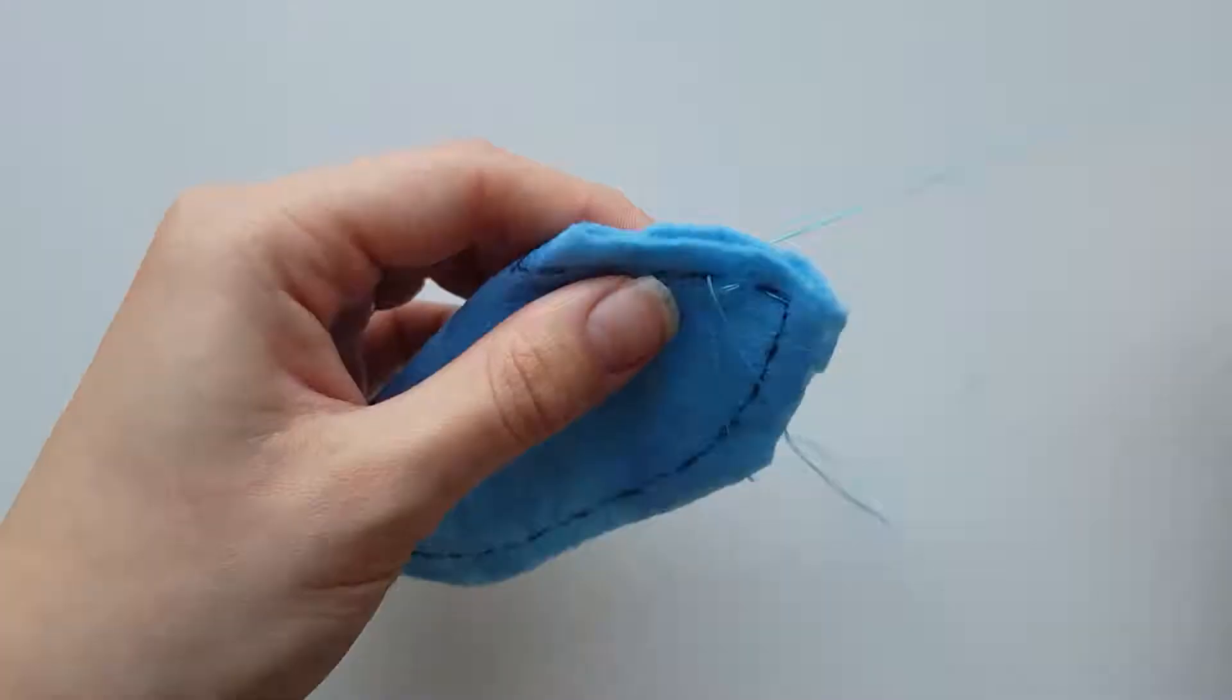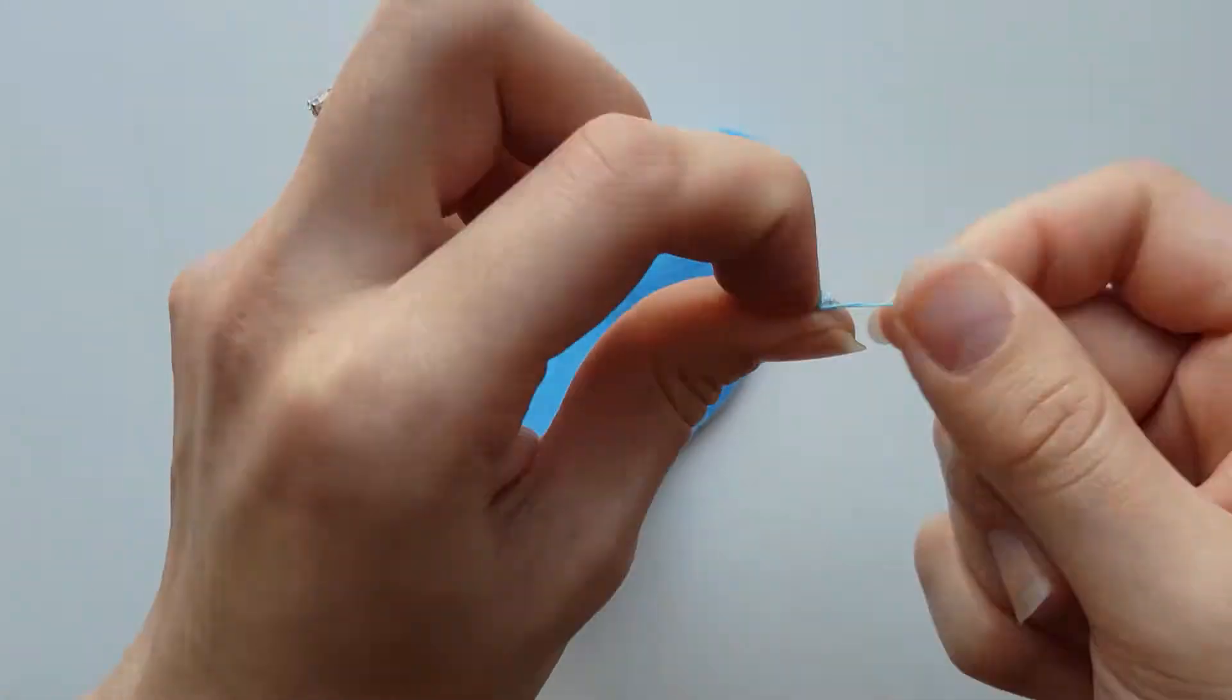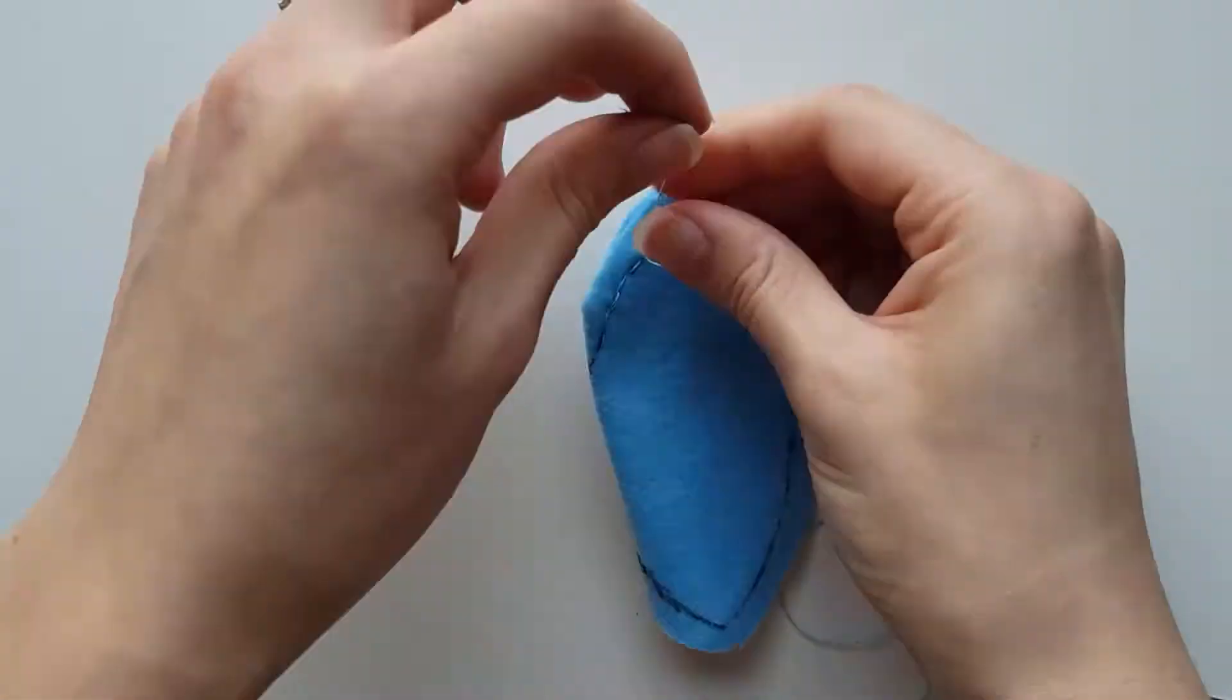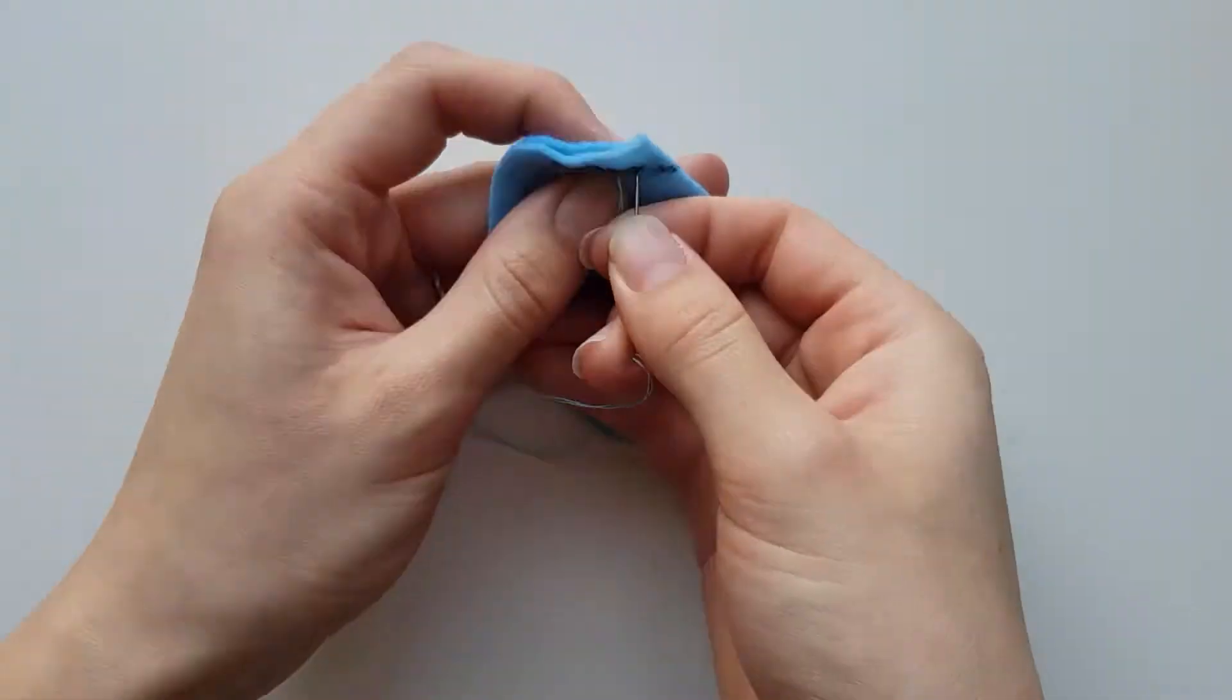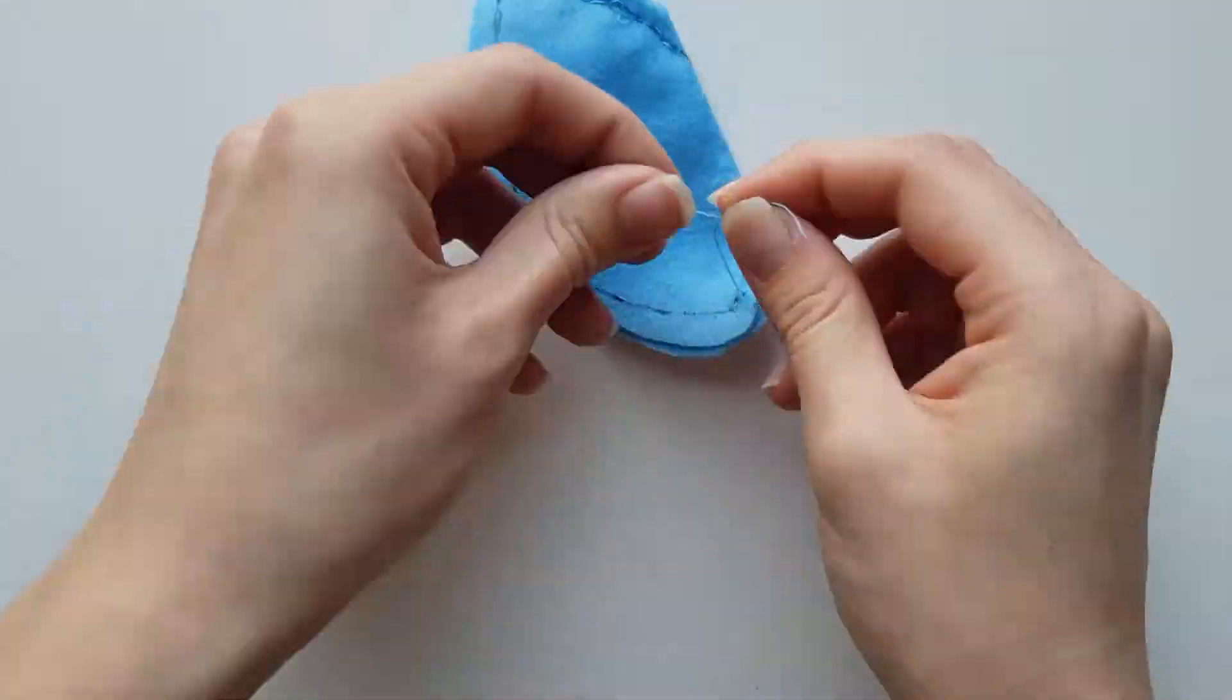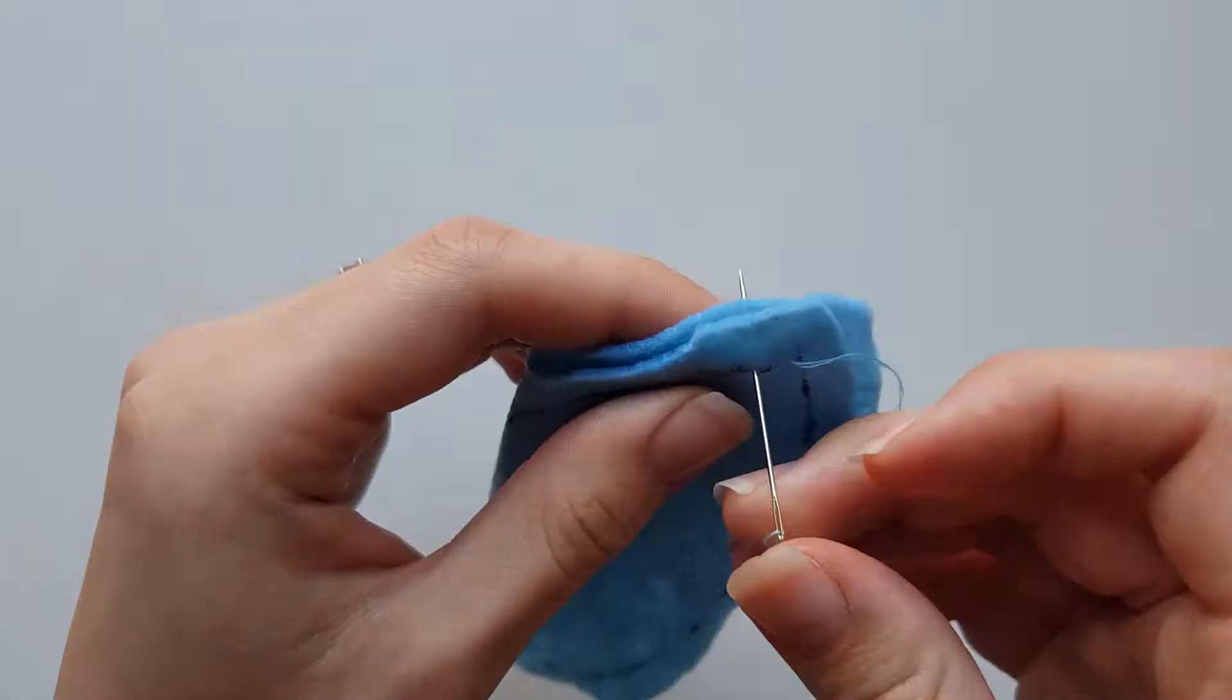Take one side of the body and sew up the two darts on either side. Repeat for the second side of the body.